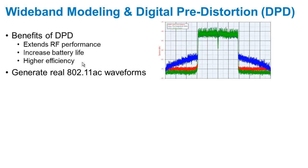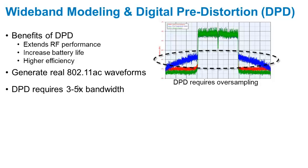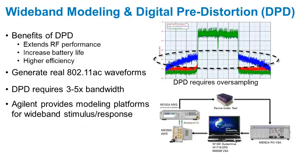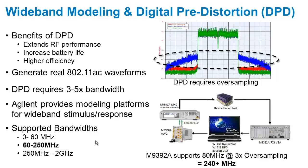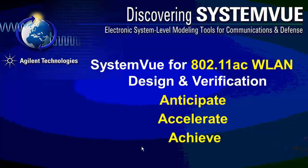Many engineers are looking at digital pre-distortion for a number of RF benefits, and for these it's helpful to be using real 802.11ac waveforms. However, digital pre-distortion requires oversampling in order to correct for these sidebands, which drives bandwidths even wider. Agilent is able to provide these with a new family of wideband instruments — the M9392A modular platform handles up to 250 MHz wide. It's even possible for SystemVue to control RF-EDA environments in a co-simulation mode and actually predict the correctability of amplifiers and wafers that have not even been fabricated yet. SystemVue is able to anticipate, accelerate, and help you achieve your 802.11ac wireless LAN system designs.